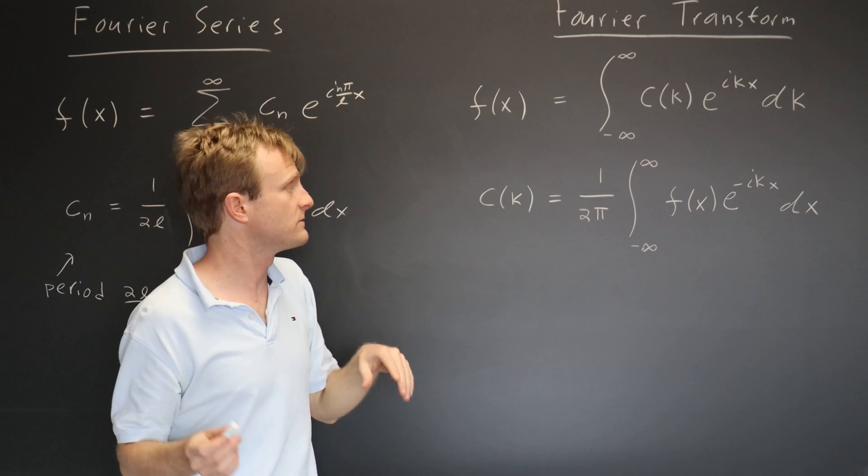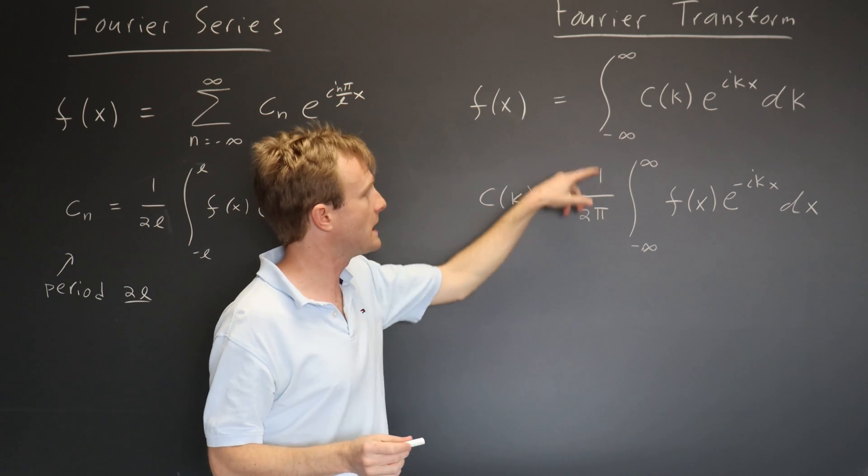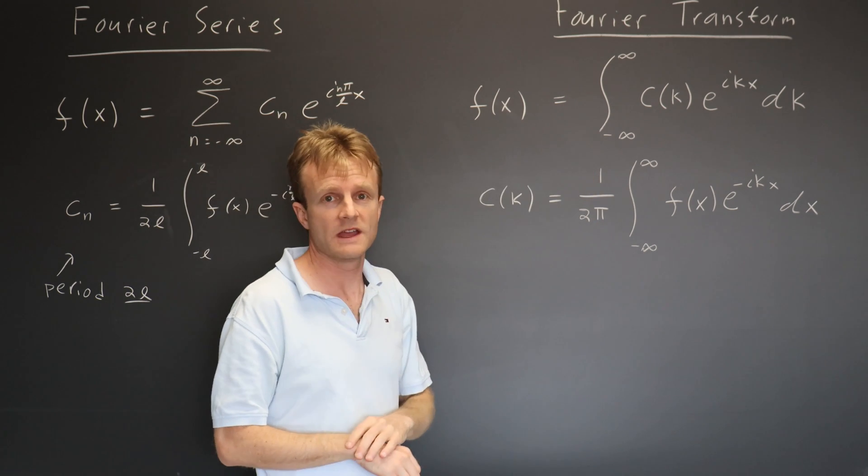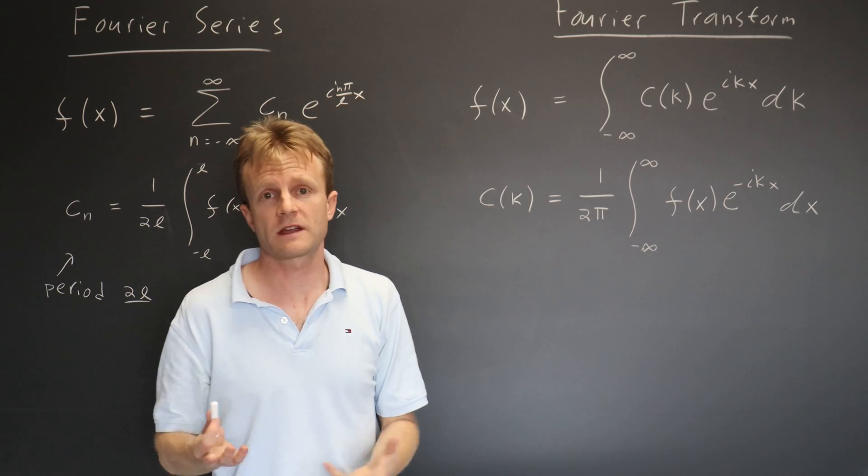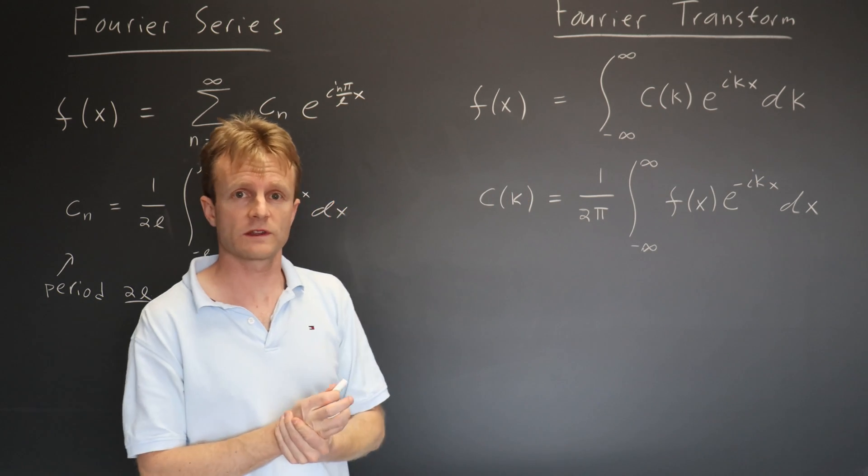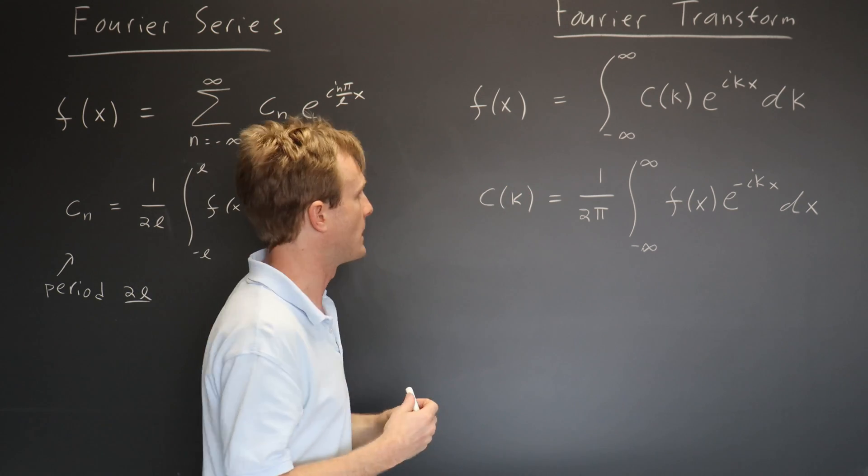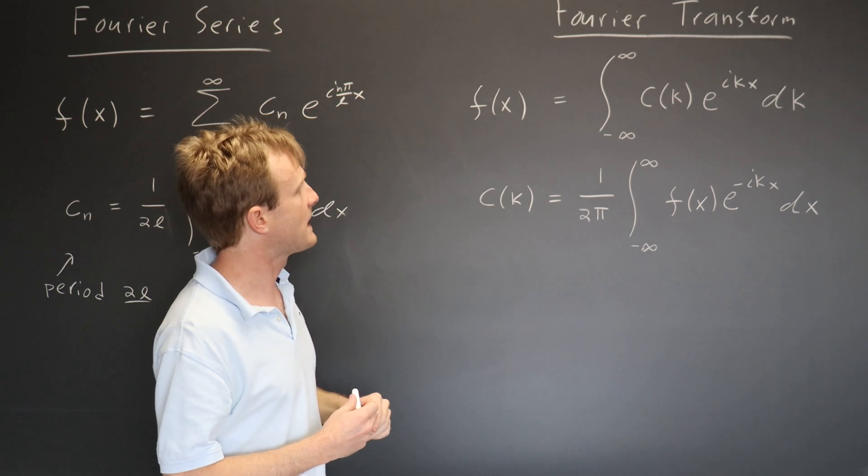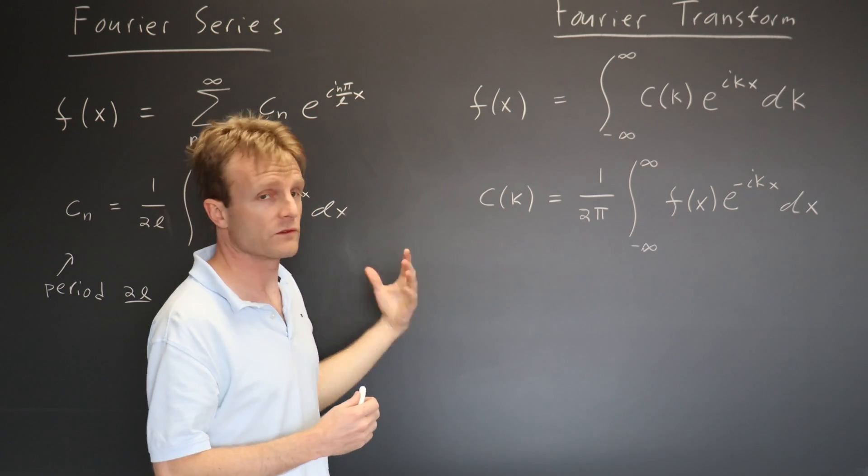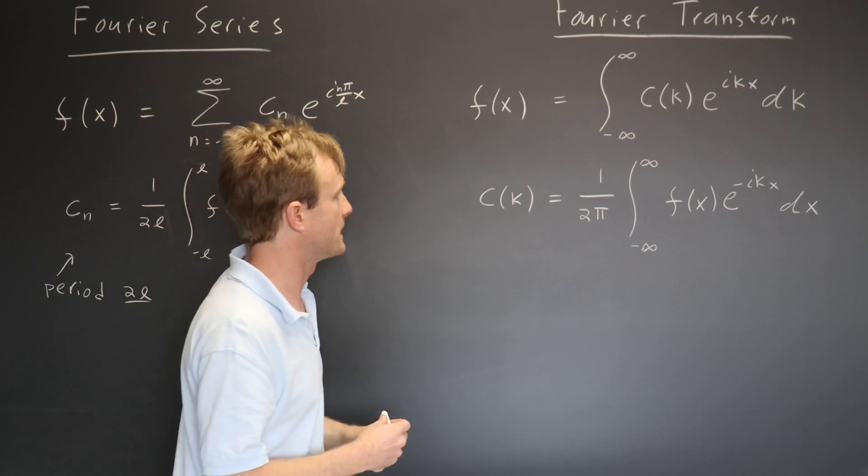the Fourier transform now looks very symmetric. In fact, by a bit of change of conventions, we could put a 1 over root 2 pi here and a 1 over root 2 pi here, and then they'd be almost identical, just the minus sign. And there are, in fact, many different conventions for Fourier transform. This is the one used in the book by Boaz. Because they're so symmetric,